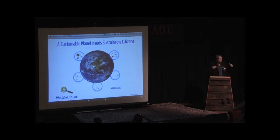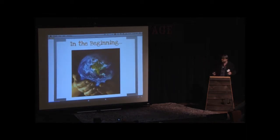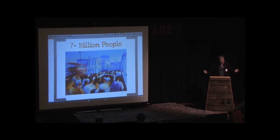So as we said, sustainable citizen. To be sustainable, the planet needs sustainable citizens. In the beginning, there was a planet. And then all of a sudden, Adam and Eve got real busy, and there were 7 billion of us.